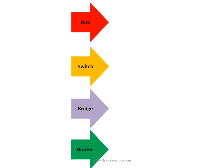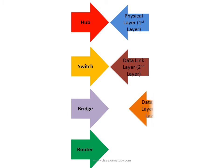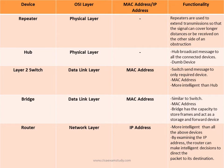Very important points to remember from SESA exam point of view: Hub operates at layer 1 (physical layer), switch operates at data link layer (layer 2), bridge operates at data link layer (layer 2), and router operates at network layer (layer 3). You need to learn at which OSI layer each device works and whether they operate on the basis of MAC address or IP address.